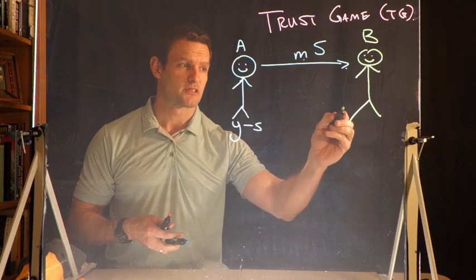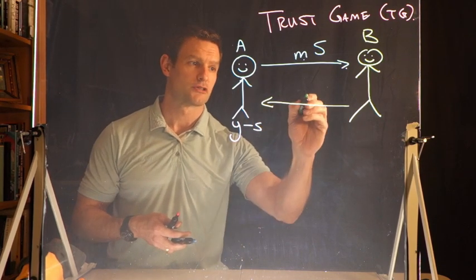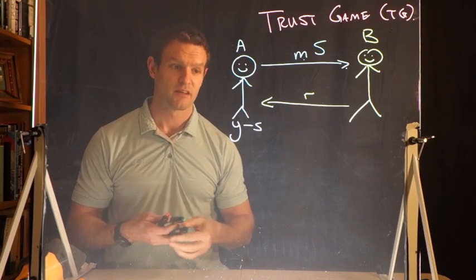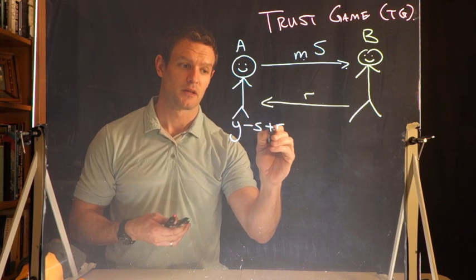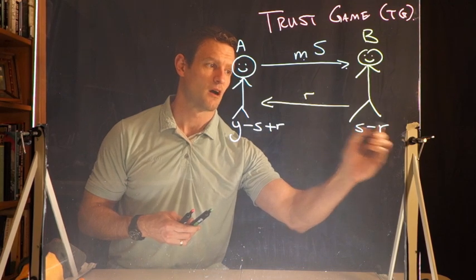Player B then has the opportunity to send back some amount R to player A. In this case, A gets Y minus S plus R, and player B gets M times S minus R.